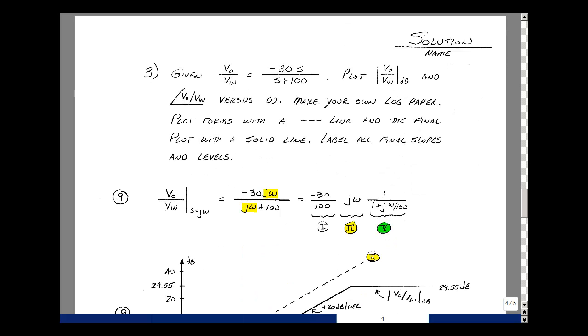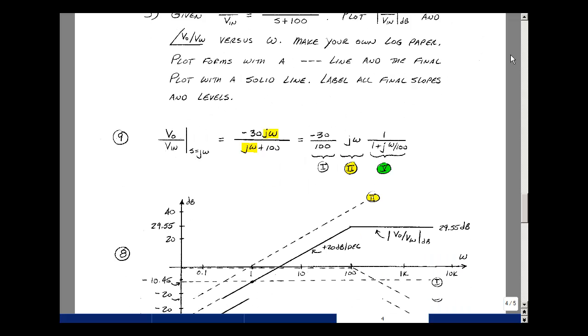In problem number 3, we're given the voltage transfer function in the S domain, and it was equal to minus 30s over s plus 100. And we're asked to plot the magnitude and angle versus omega. We need to make this look like our forms, and so let's replace s by jω, so minus 30jω over jω plus 100. jω is one of our terms, so I'll leave that there. Pull out the minus 30, and I've got to get a 1 over here, so pull out 100. So I'm left with 1, and then jω divided by 100.